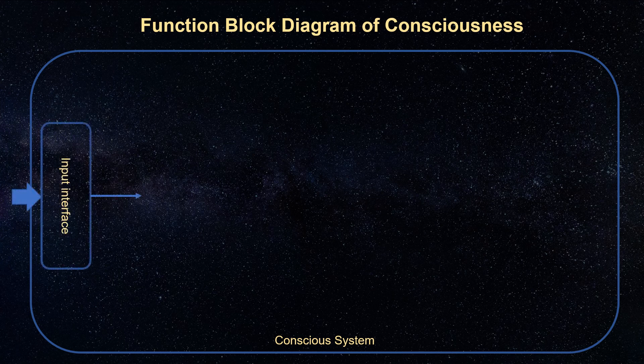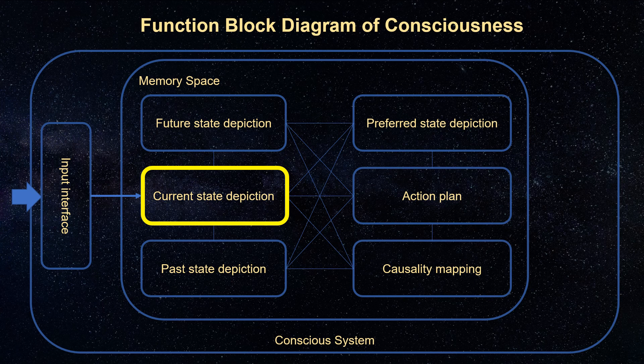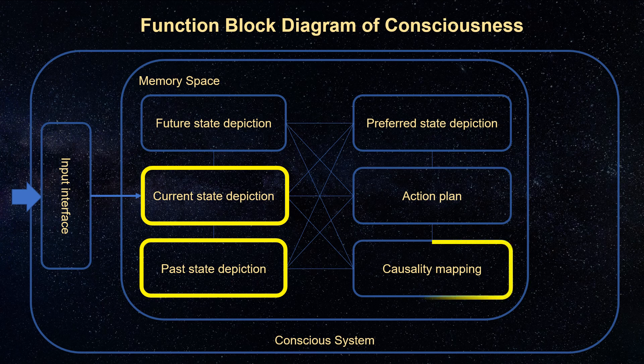Information from the environment is collected by the input interface. It is stored in the memory block depicting current state. Soon it will be transferred to the memory block depicting past state, simply because time flows and the environment changes. Current state memory will be updated by new information. In the information stored in the past state memory block, some patterns can be found which can be used to draw a causality mapping and other relationships among different things. Combined with current and past state memory, causality mapping can be used to predict future state.